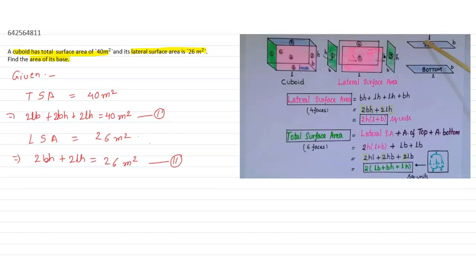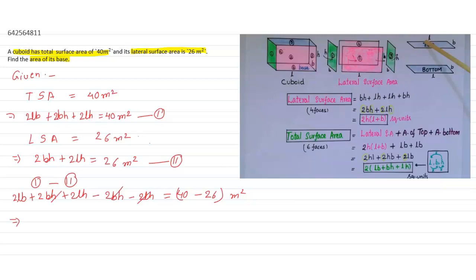Now we have two equations, and for finding the area of the base or bottom we subtract equation two from equation one. That gives us 2lb + 2bh + 2lh − 2bh − 2lh = 40 − 26 metre square. The 2bh and 2lh terms cancel, so we have 2lb = 14 metre square, and therefore lb = 14 ÷ 2 = 7 metre square.